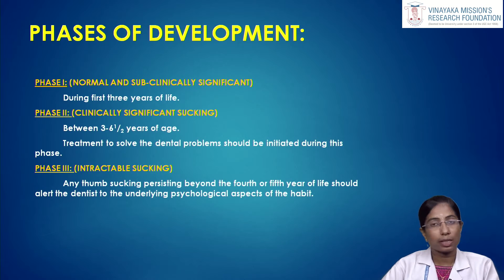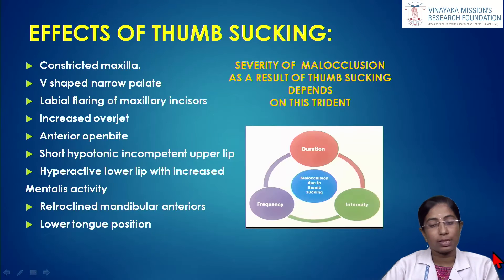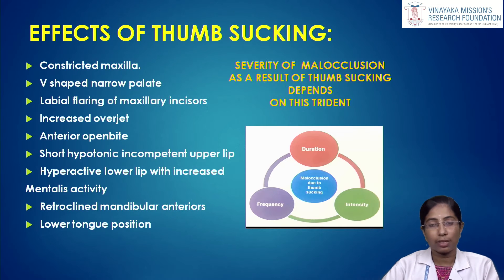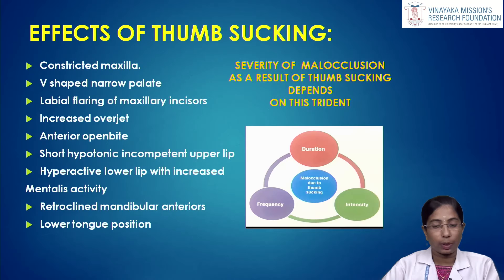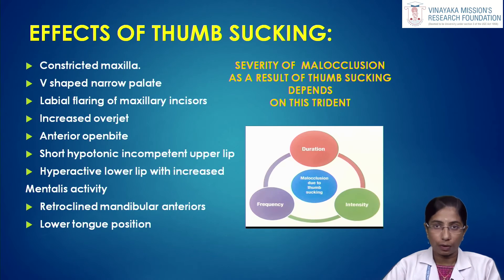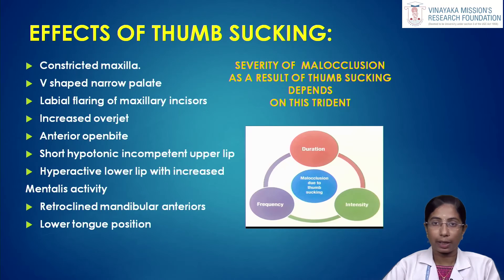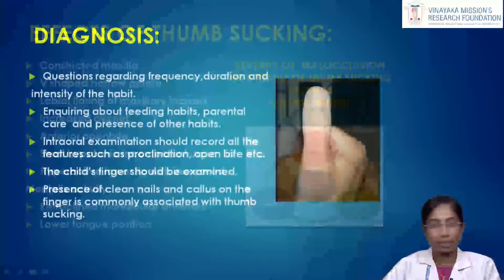The severity of malocclusion resulting from thumb sucking depends on three factors: duration, frequency, and intensity. The clinical features seen due to this habit are constricted maxilla, V-shaped narrow palate, labial flaring of maxillary incisors, increased overjet, anterior open bite due to intrusion of upper and lower anteriors, short hypotonic incompetent upper lip, hyperactive lower lip with increased mentalis activity, and lower tongue position.